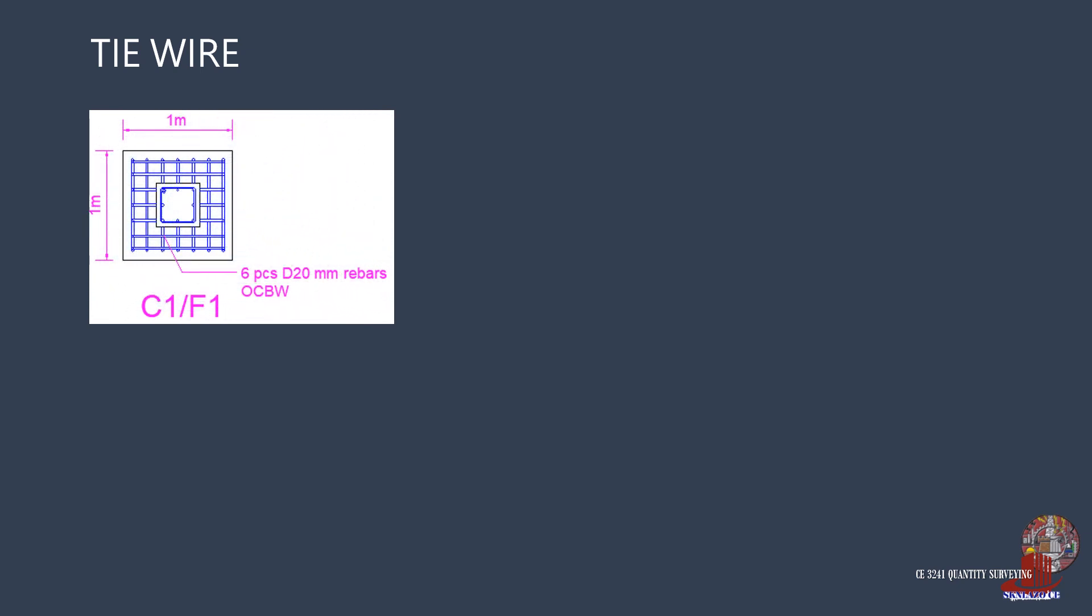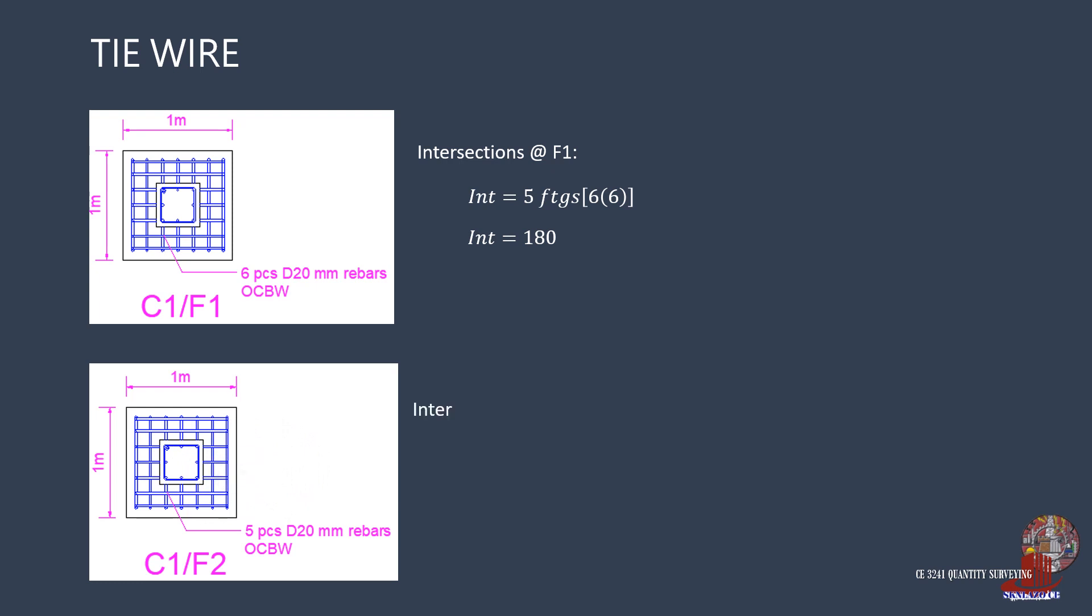For the tie wires, start by counting the intersections. For footing F1, the intersections are computed as 5 footings with 6 times 6 intersections, resulting to 180. The intersections in footing F2 is then 4 times 5 longitudinal bars by 5 transverse bars, resulting to 100. The total number of intersections for all footings is then 100 plus 180, turning to 280 total intersections.